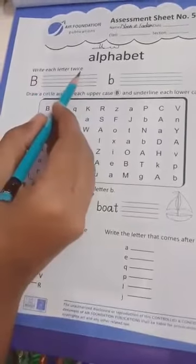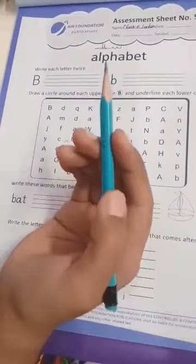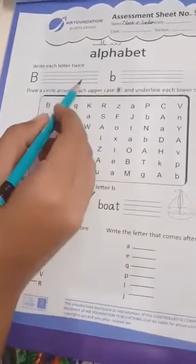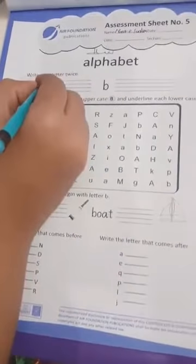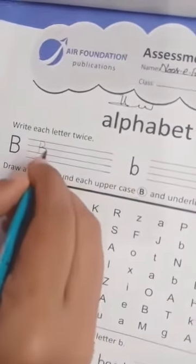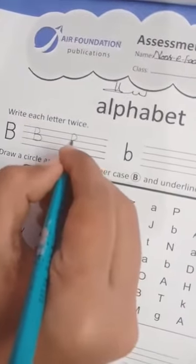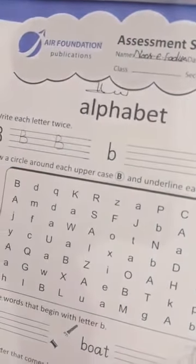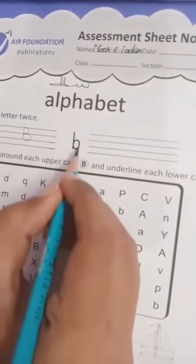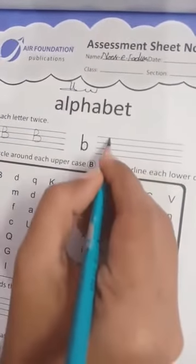Write each letter twice. We have letter A written two times. This way, we write letter B two times in three upper lines like this. After this, we write sound book two times.